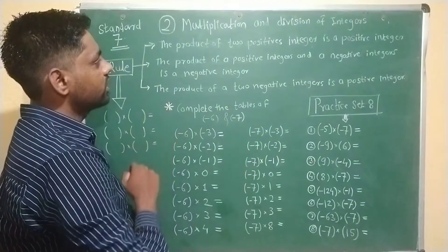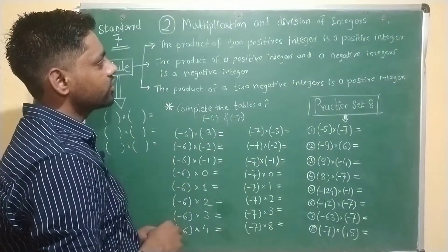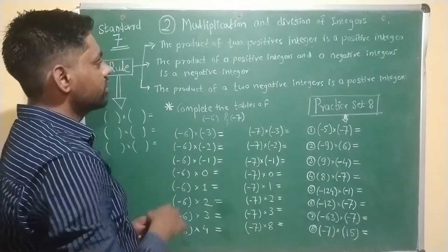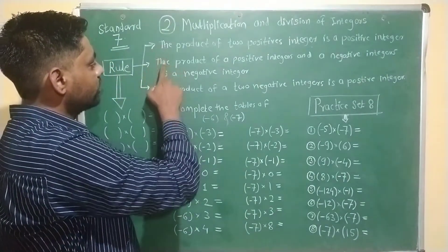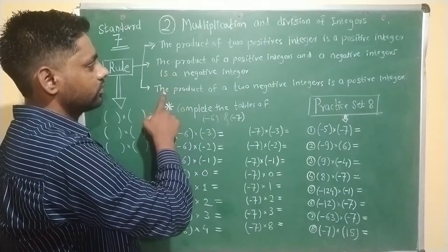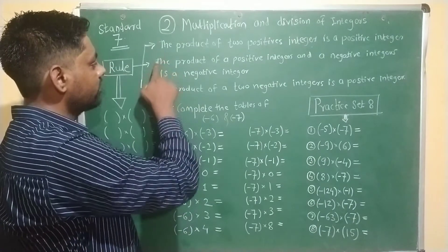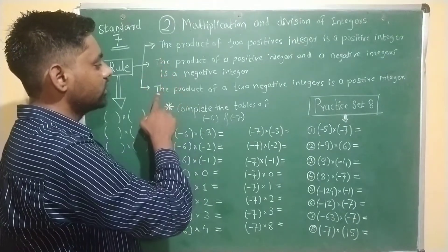For studying the multiplication of integers, we study three rules. These three rules are very important.